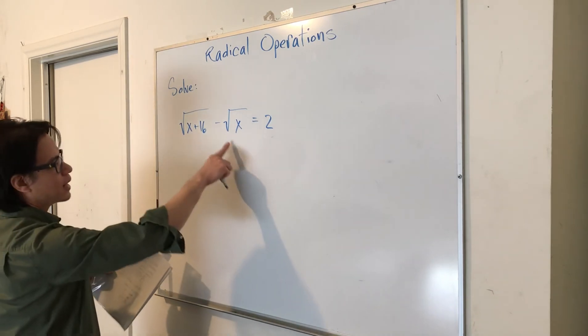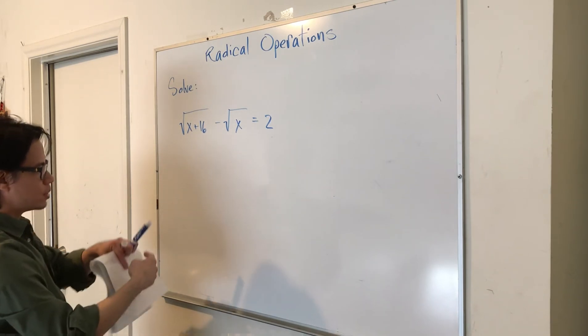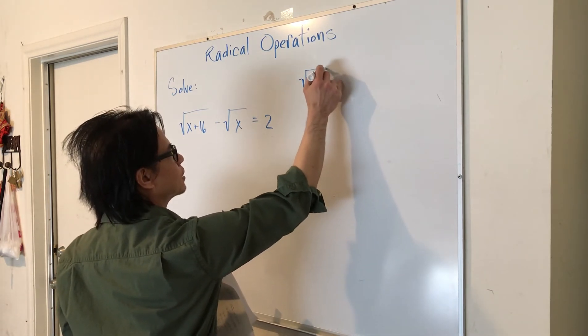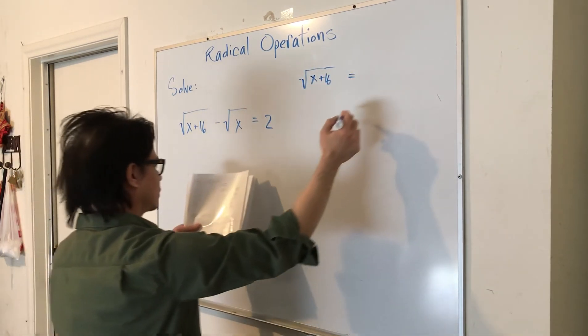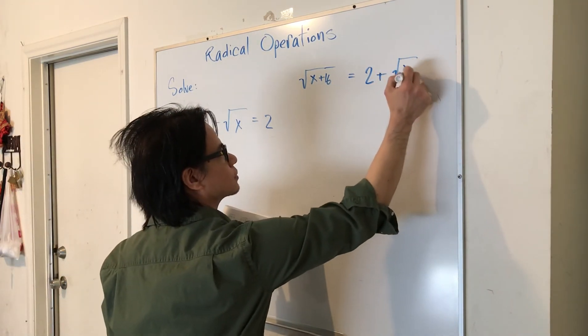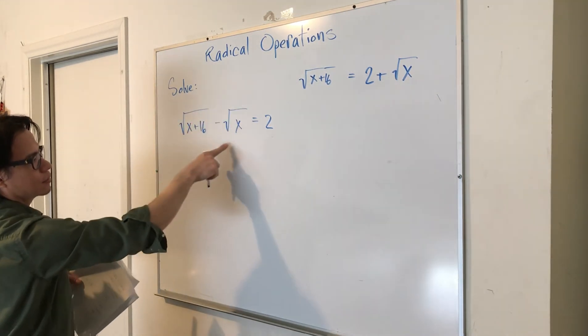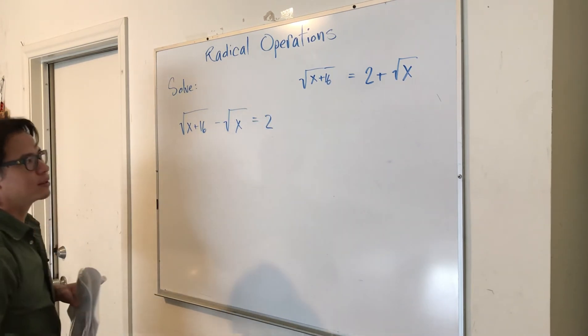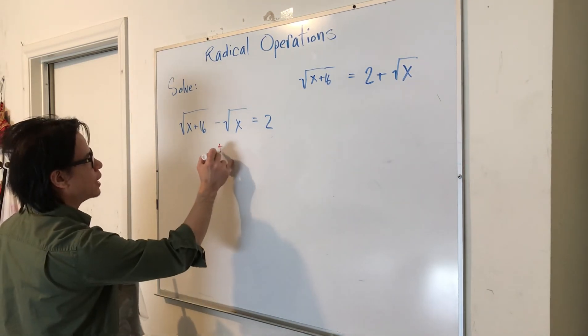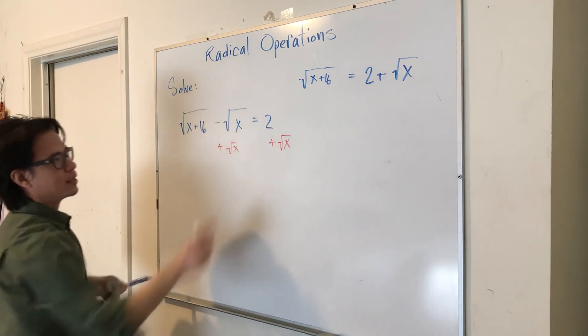I'm going to move this guy to the other side so I'm going to add the square root of X to both sides. So on the left we're going to have the square root of X plus 16 equals 2 plus root X. So all we did was move this square root of X here to the right side by adding it to both sides. What we did was add the square root of X to both sides in order to get that equation there.